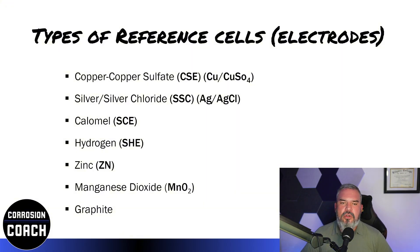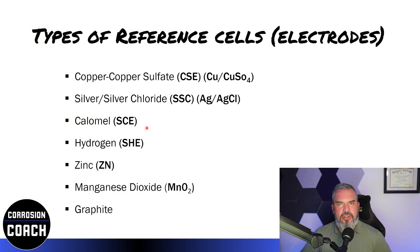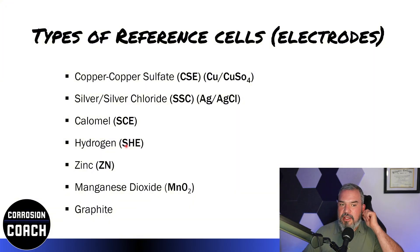If we're in an environment where the soil happens to be salt water, we can use a silver-silver chloride reference electrode — that's the second bullet point. You might also hear about the calomel and hydrogen electrodes. Those two in the middle are not really used in the field; they're used in a lab setting. For example, a university lab running controlled tests would want a very stable reference electrode with accurate readings, and they'd use calomel for that.